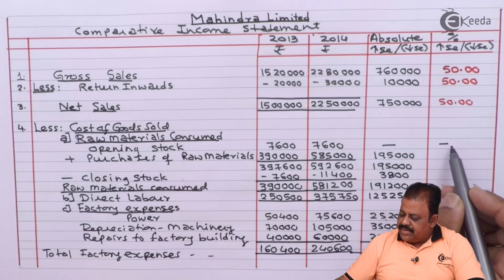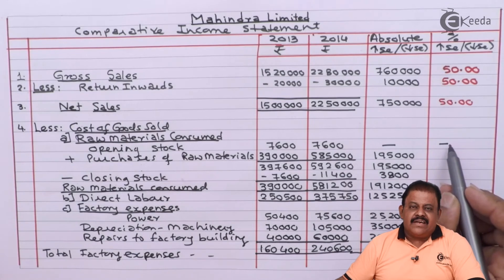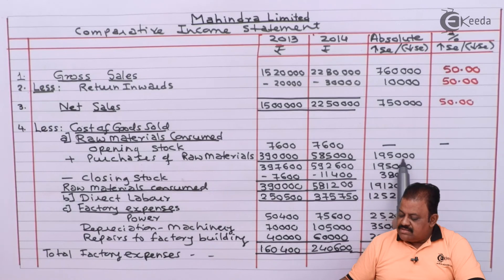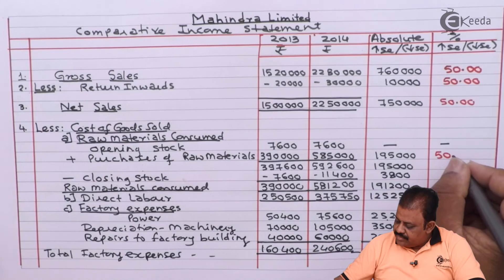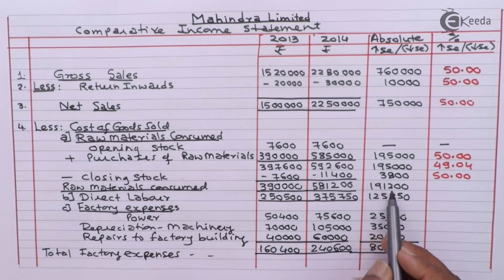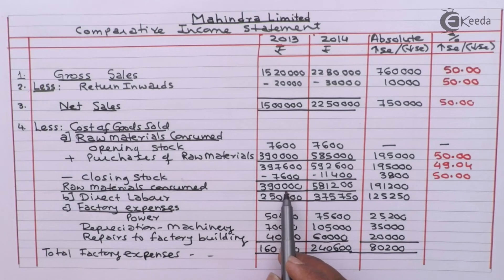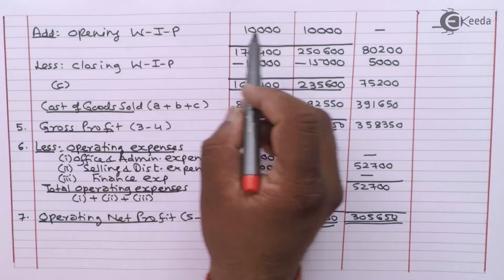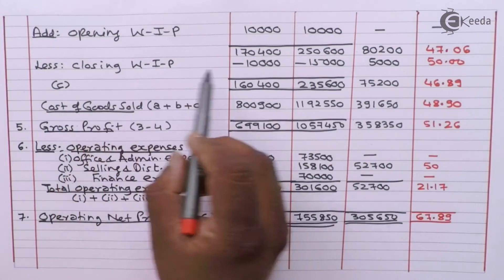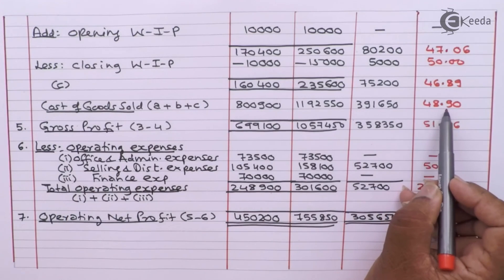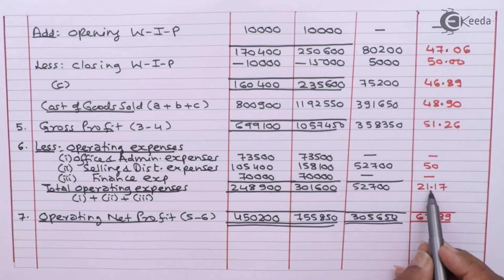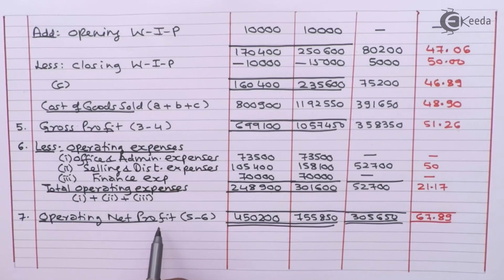Opening stock shows no percentage increase or decrease because both years' figures are the same. Purchases of raw material: 1 lakh 95,000 divided by 3 lakh 90,000 multiplied by 100 equals 50%. Raw materials consumed also gives 50%, and factory expense items each give 50%. Cost of goods sold increases by 48.90%, gross profit by 51.26%, total operating expenses by 21.17%, and operating net profit increases by 67.89%.